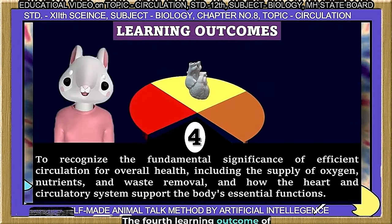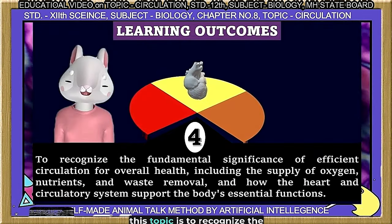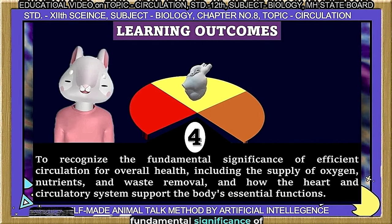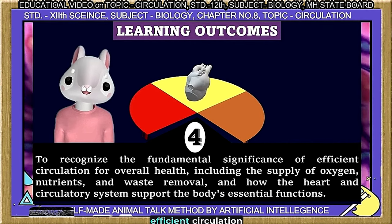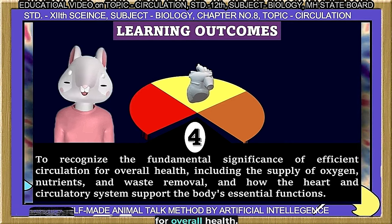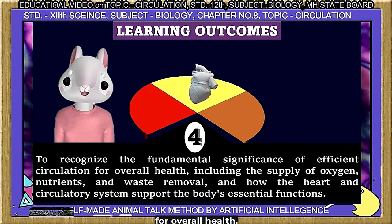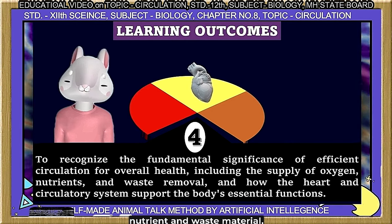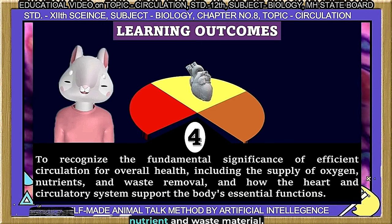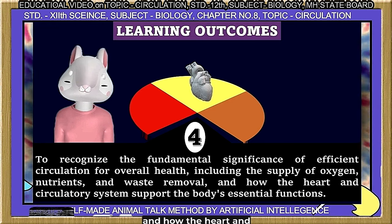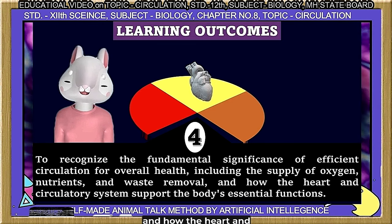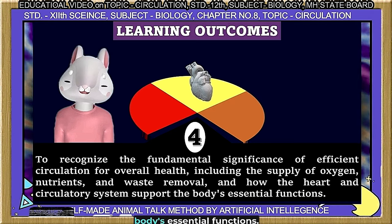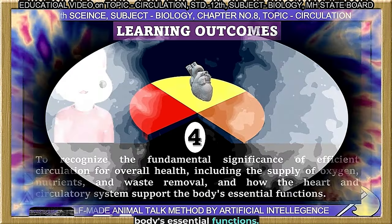The fourth learning outcome is to recognize the fundamental significance of efficient circulation for overall health, including the supply of oxygen, nutrients, and waste removal, and how the heart and circulatory system support the body's essential functions.